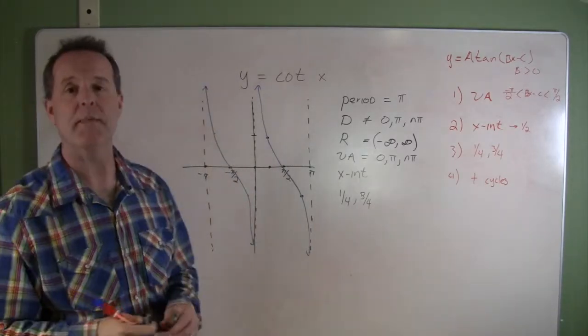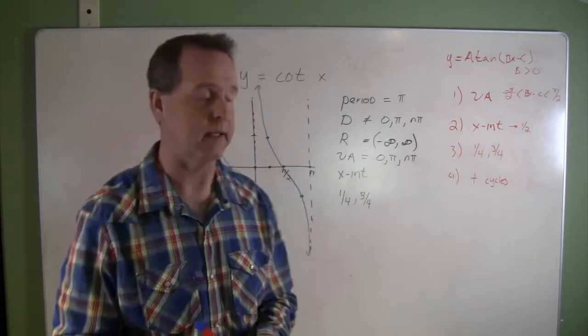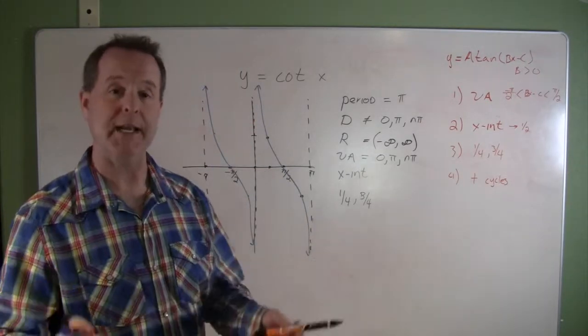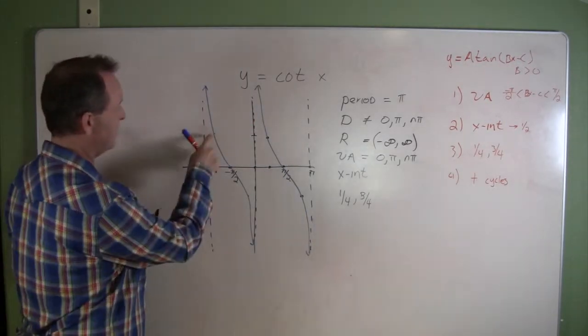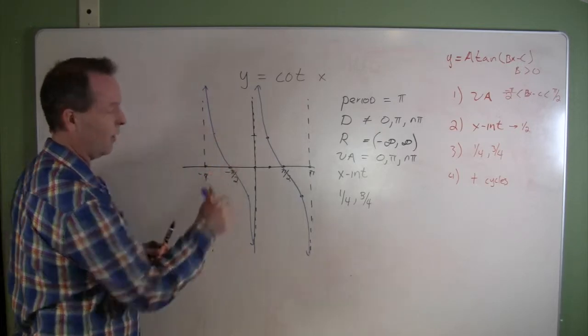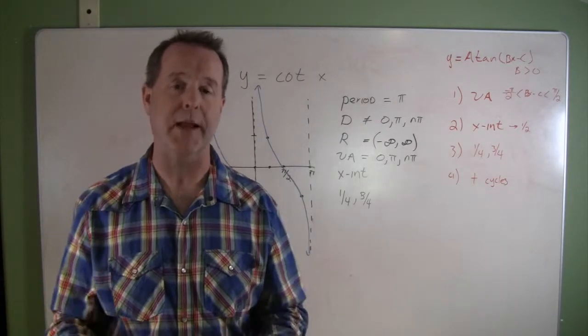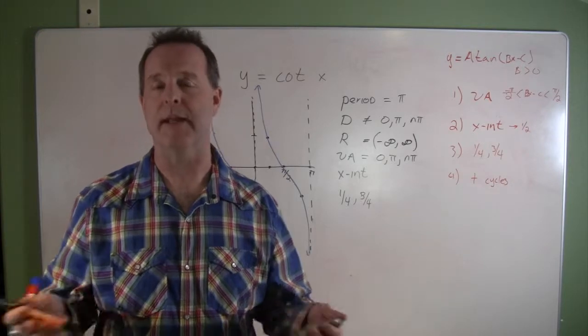And then I can repeat that indefinitely towards negative infinity or positive infinity. So that's the basic cotangent graph. These particular points on this graph—we do have the tools to find out exactly where those points are with some basic algebra.